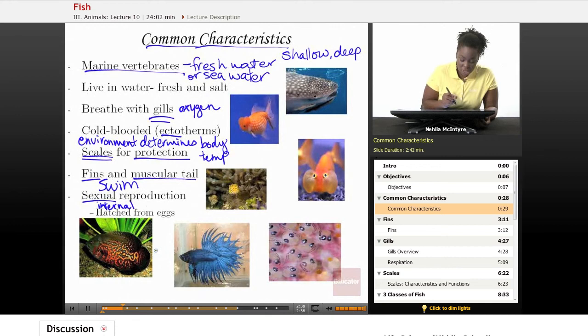And then some have external fertilization, and that means that the female actually deposits thousands of eggs outside of her body, and then the male comes along and deposits its sperm in the same area, and that's how the fish are fertilized.